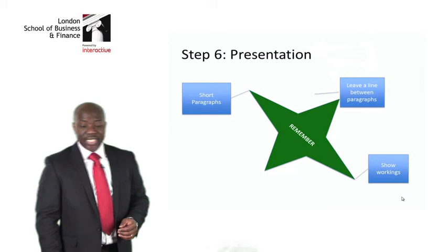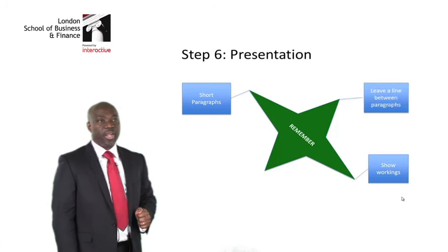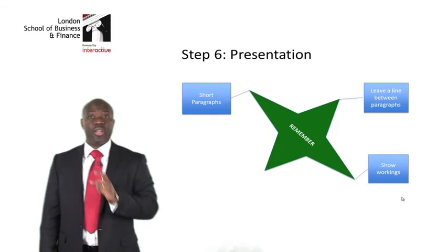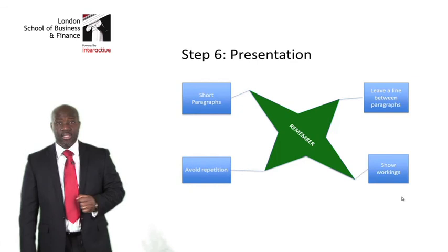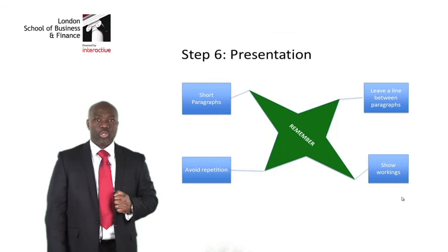The third step: make sure you leave a line between paragraphs. This makes it easy to score marks because the marker will be able to identify your points easily. The last step: avoid repetition, because repetition wastes your time and scores you no marks.